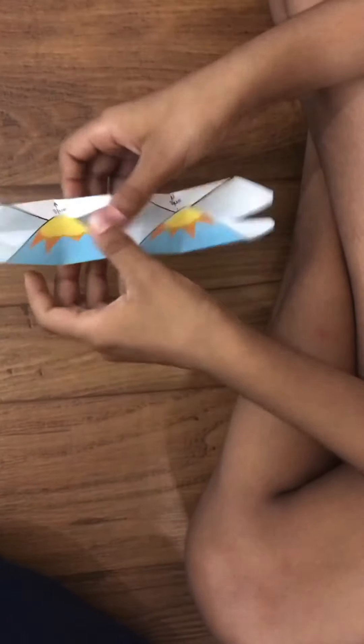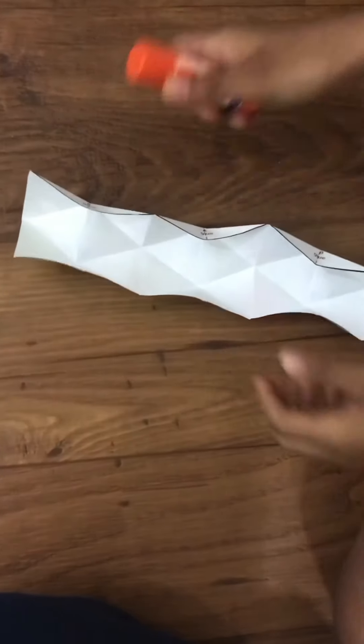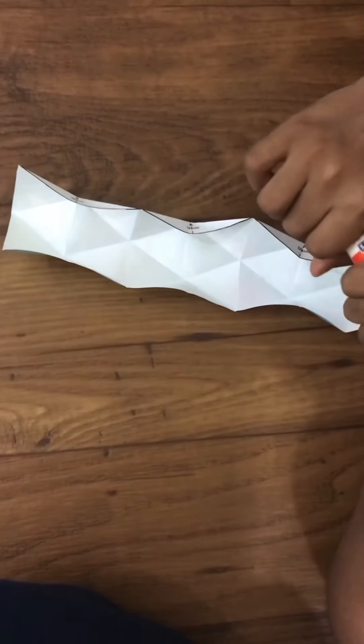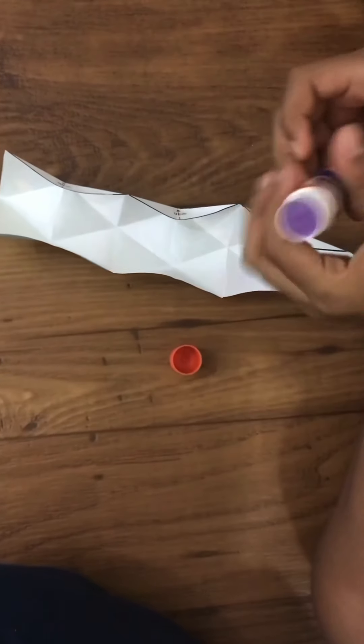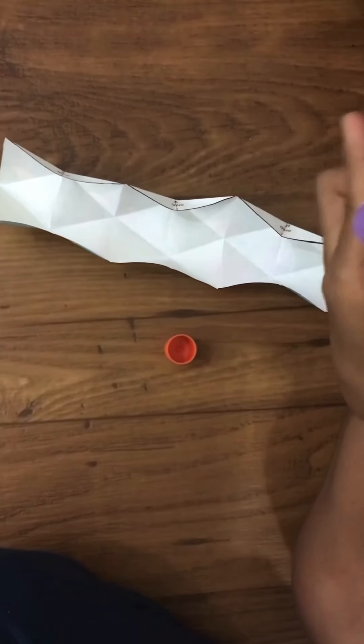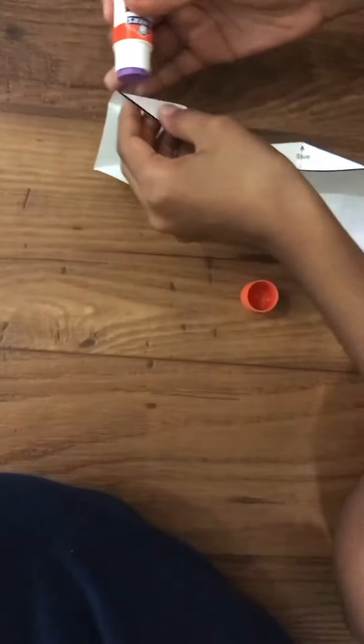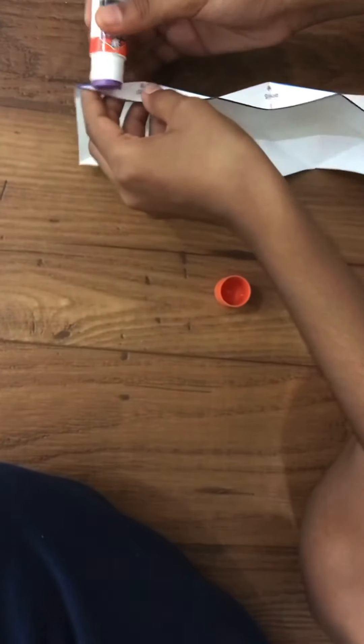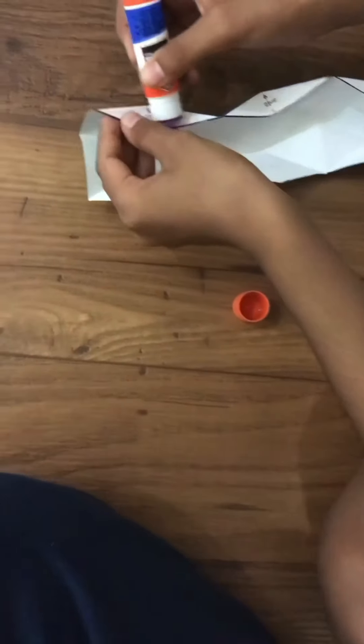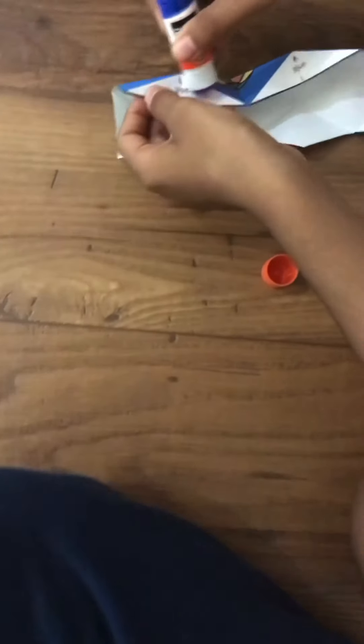So once you've folded all of them, now we're going to add glue. I'm using glue stick. You can use double-sided tape too if you want.